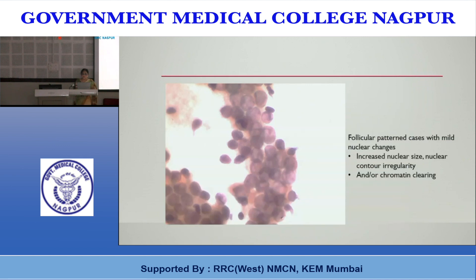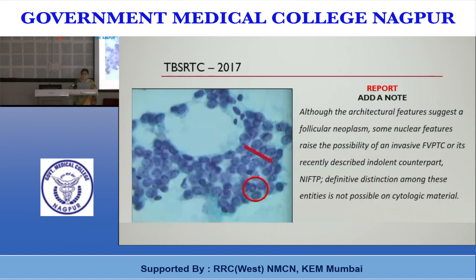Typical features of NIFTP: mild nuclear atypia, crowding, follicular arrangement, grooves, pale nuclei, and irregular nuclear contours. True papillae and nuclear holes should not be seen. In some instances, when you see both architectural features of follicular neoplasm and nuclear features concerning for PTC — like nuclear holes and grooves — the Bethesda system allows you to add a note: 'Definite distinction among these entities is not possible on cytology material; kindly consider the possibility of NIFTP.'